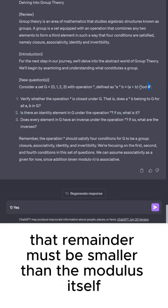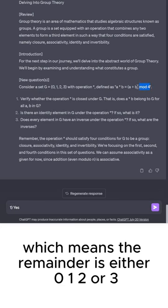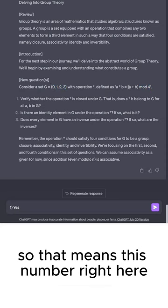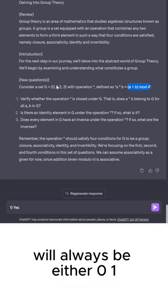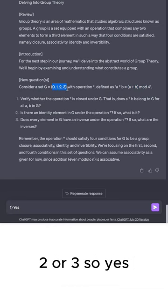That remainder must be smaller than the modulus itself, which means the remainder is either 0, 1, 2, or 3. So that means this number right here will always be either 0, 1, 2, or 3. So yes, this is closed.